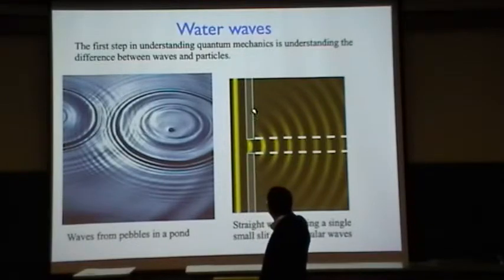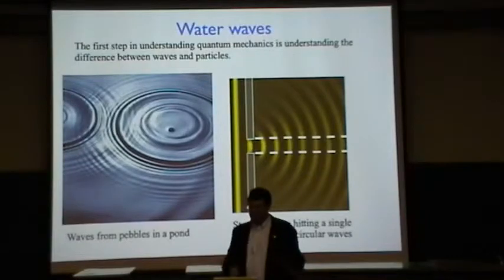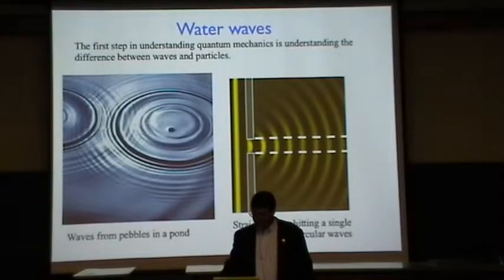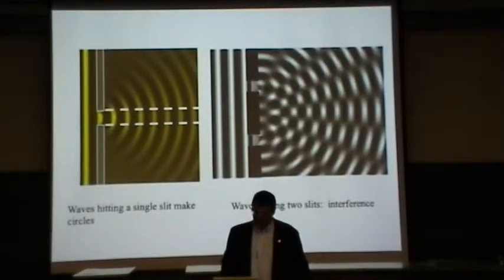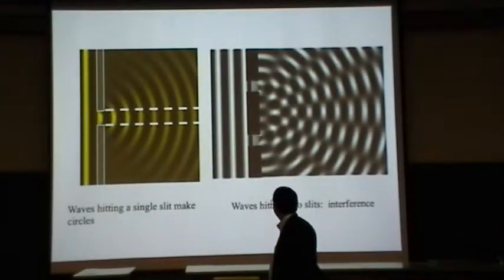On the left is the same picture again. On the right is a phenomenon called interference, when you have two different slits and you have straight waves hitting. The waves come out of both little slits.